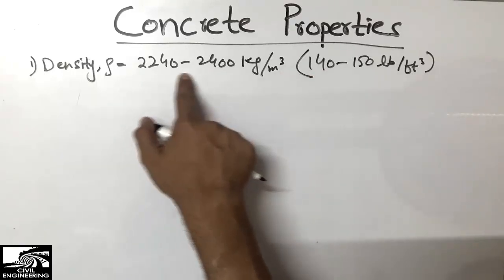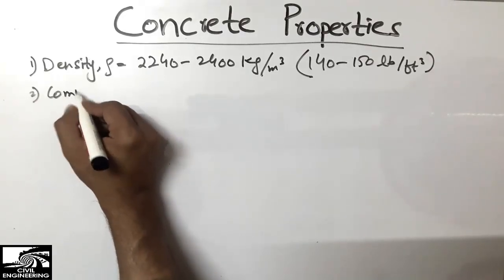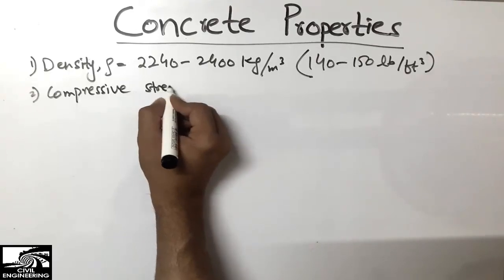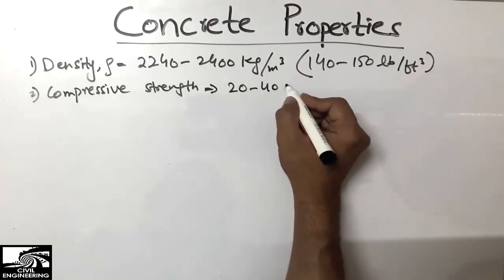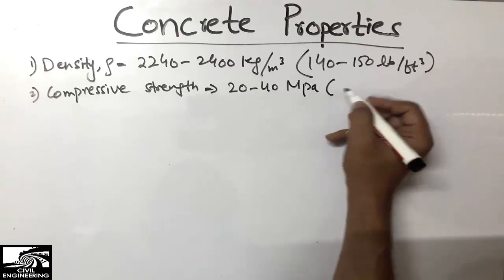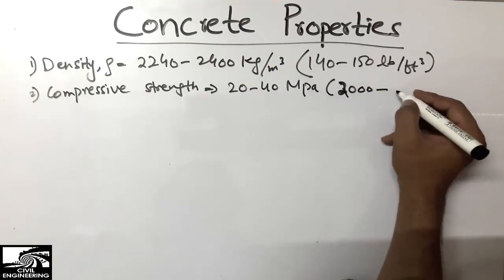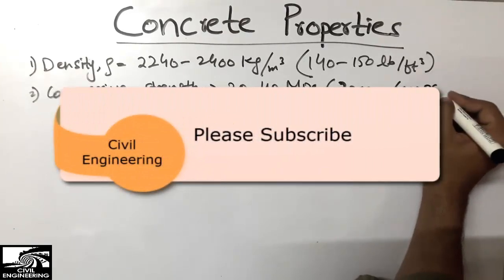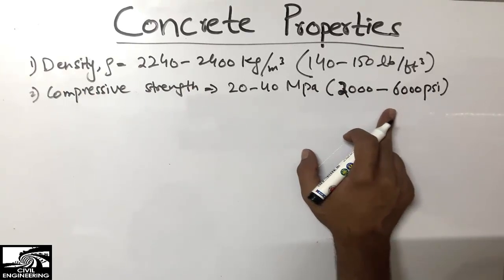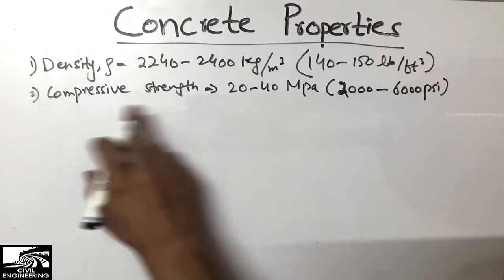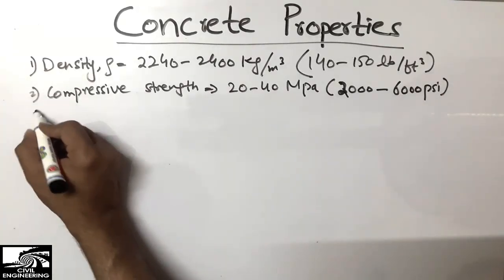The second property is the compressive strength of concrete. Compressive strength usually ranges from 20 to 40 megapascal, or we can say in psi it ranges from 2000 to 6000 psi. There are also some concretes with strength more than 6000 psi — we call it ultra high strength concrete.